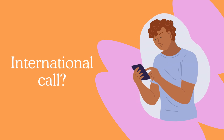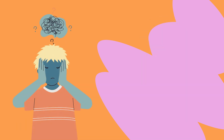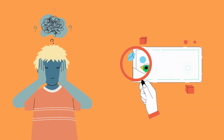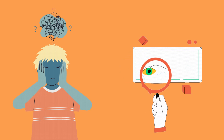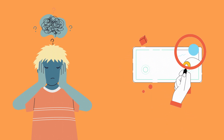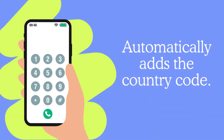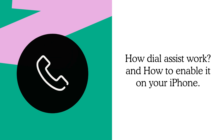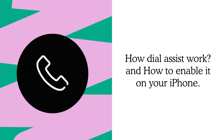Imagine if you want to make an international call, but you can't remember the country code, or you're constantly searching for it. That's where Dial Assist on iPhone comes in handy. It automatically adds the right country or area code for you, making international calls much simpler. In this video, we'll explain how Dial Assist works and show you how to enable it on your iPhone. Let's get started!